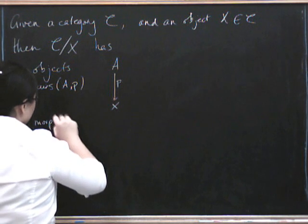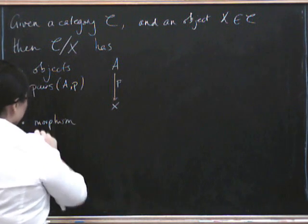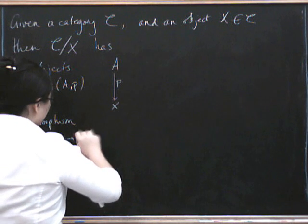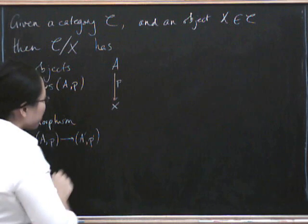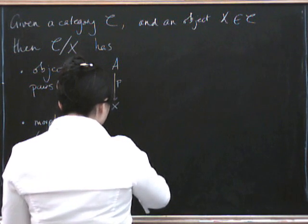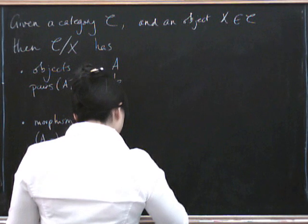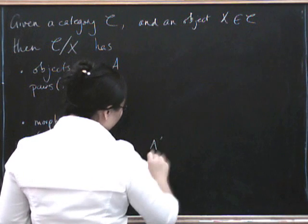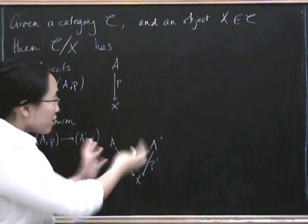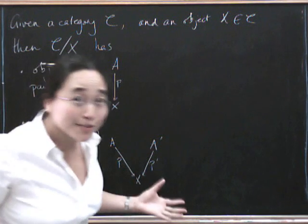So let's see, the morphisms. So we have to think about morphisms from a pair A, P to a pair A prime, P prime. So if we just write out what that data is, it's A with a morphism down to x, and it's A prime with a morphism P prime down to x. So what could a morphism from here to here possibly be?